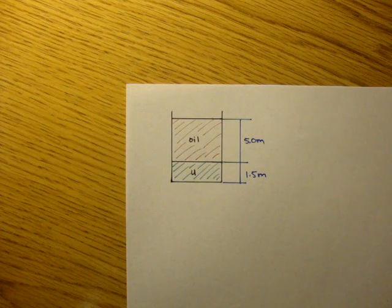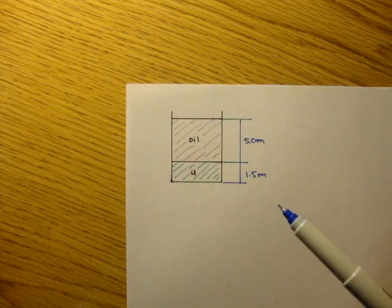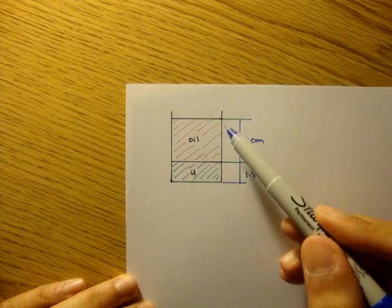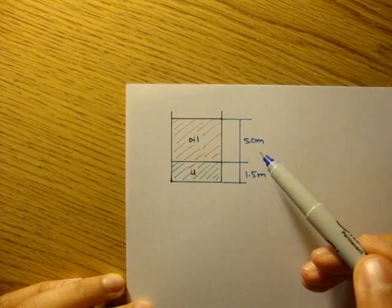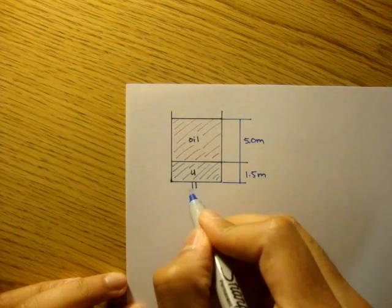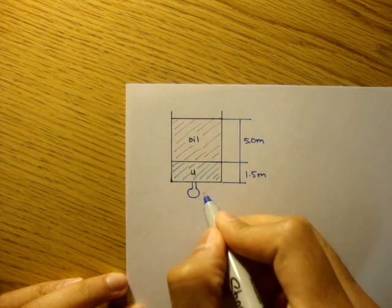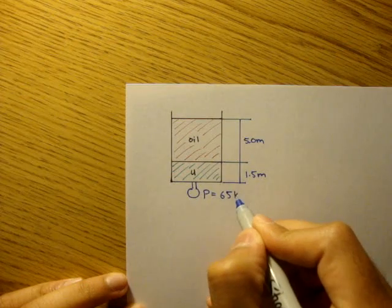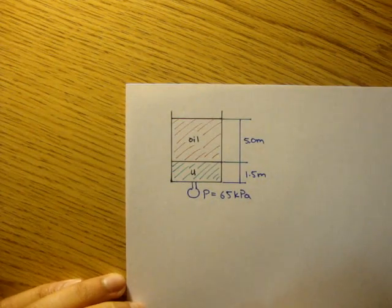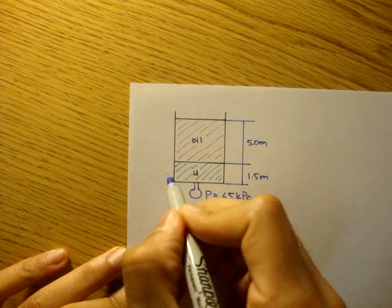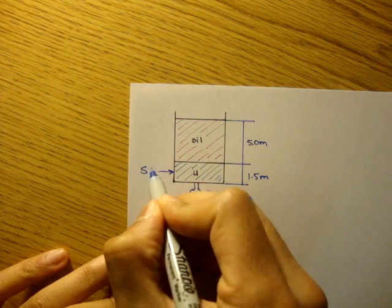An unknown immiscible liquid seeps into the bottom of an open oil tank. Measurements indicate that the depth of the unknown is 1.5 meters and the depth of the oil floating on top is 5 meters. There's a pressure gauge here reading 65 kilopascals. The question is asking what is the specific gravity of the unknown liquid?